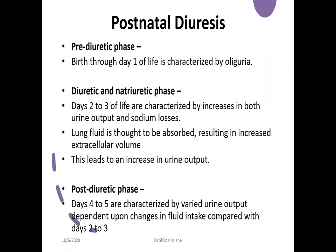This shuffling in fluid continues post-birth. Preterm neonates undergo three phases of sodium and water changes. The first is the pre-diuretic phase from birth to day one, characterized by oliguria with urine output around 1 ml/kg/hour. The second is the diuretic or natriuretic phase starting day two to three, characterized by increased urine output and sodium losses. Lung fluid is absorbed and lung condition improves during this phase.